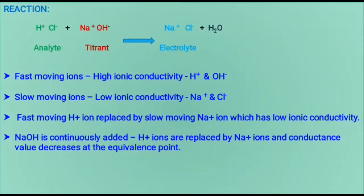We are going to determine how much HCl is present, so sodium hydroxide is taken in the burette. H⁺ and OH⁻ ions are fast-moving ions with high ionic conductivity, while Na⁺ and Cl⁻ ions have low ionic conductivity. Fast-moving H⁺ ions are replaced by slow-moving Na⁺ ions. As sodium hydroxide is continuously added, H⁺ ions are replaced with Na⁺ ions and the conductance values decrease.